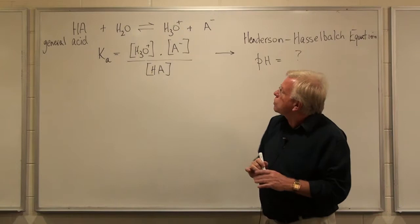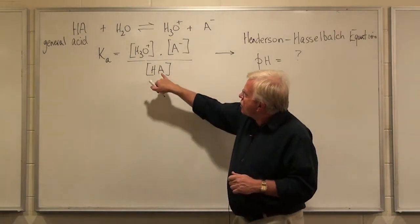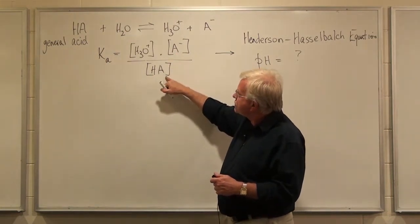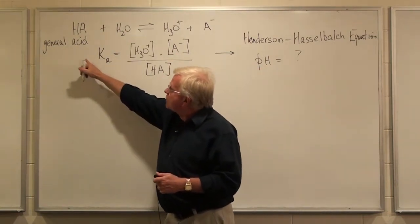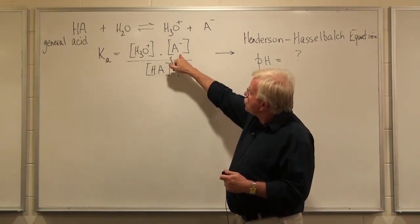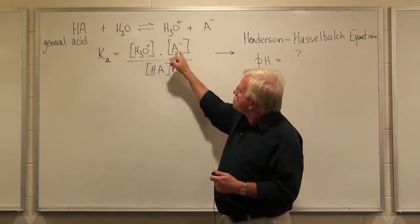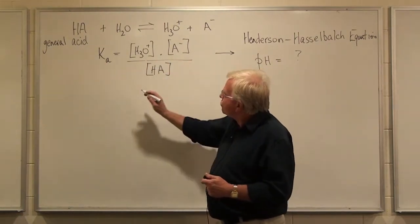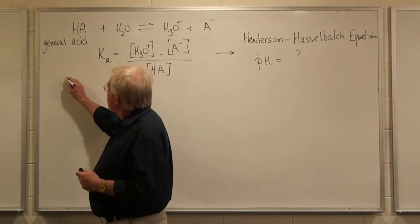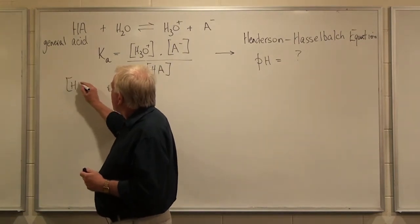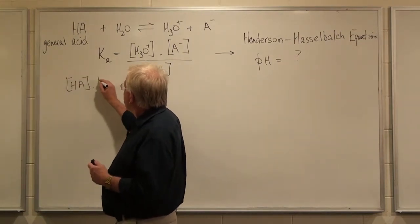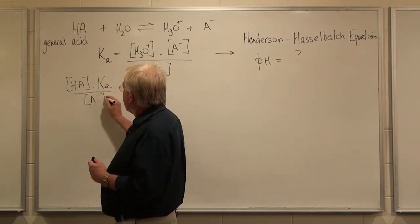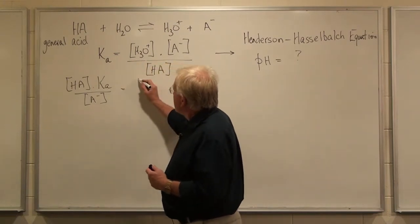So let's manipulate this equation. We want to bring this term over with Ka, so if it's divided on this side, when we bring this across, it'll be multiplied on this side. And this term, if we bring that across, if it's multiplied at the top here, then when it comes across, it'll be divided over here. So we can rewrite this, like so.